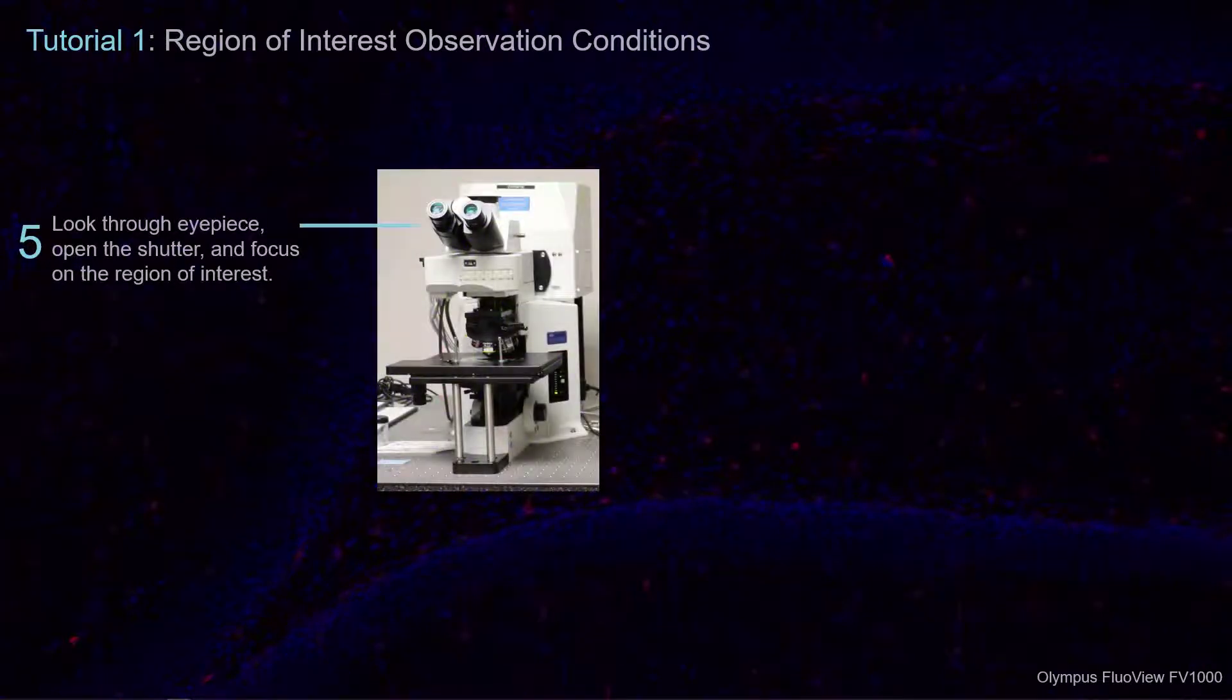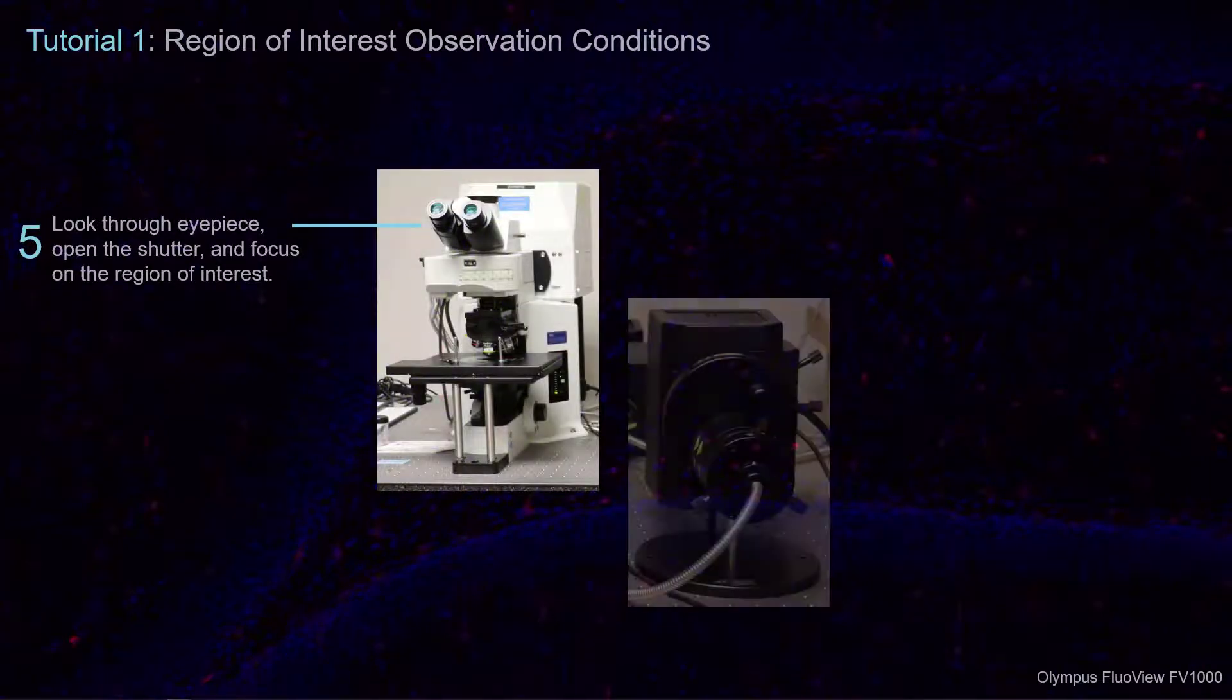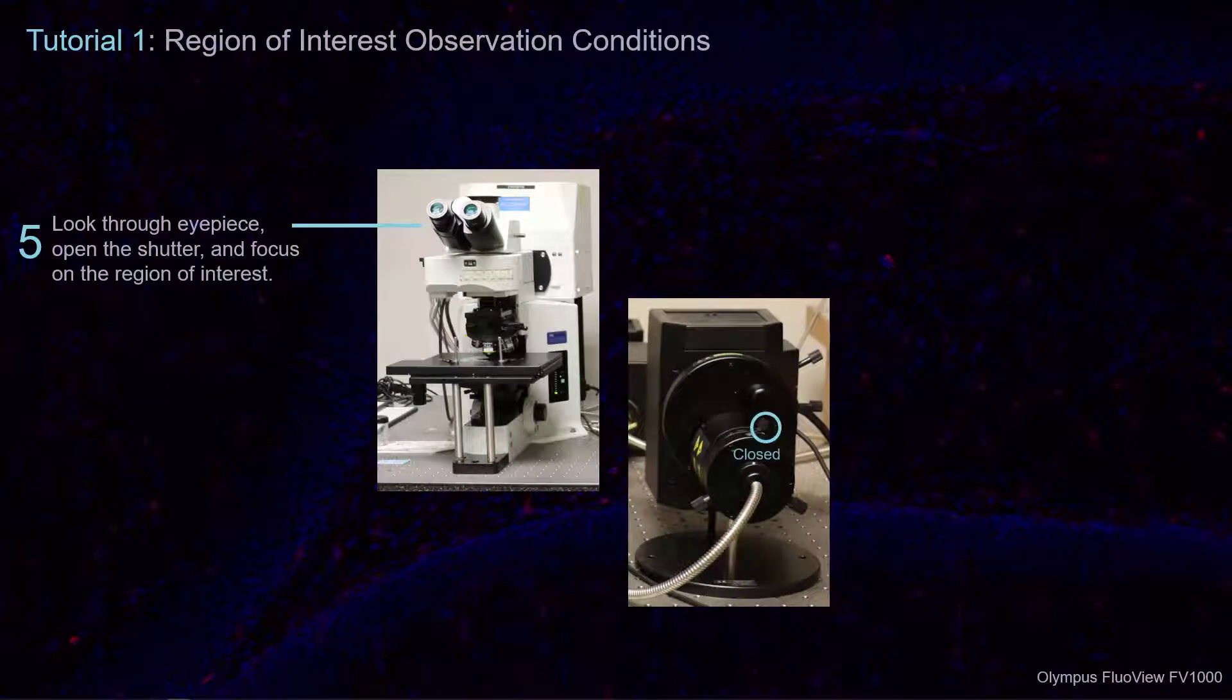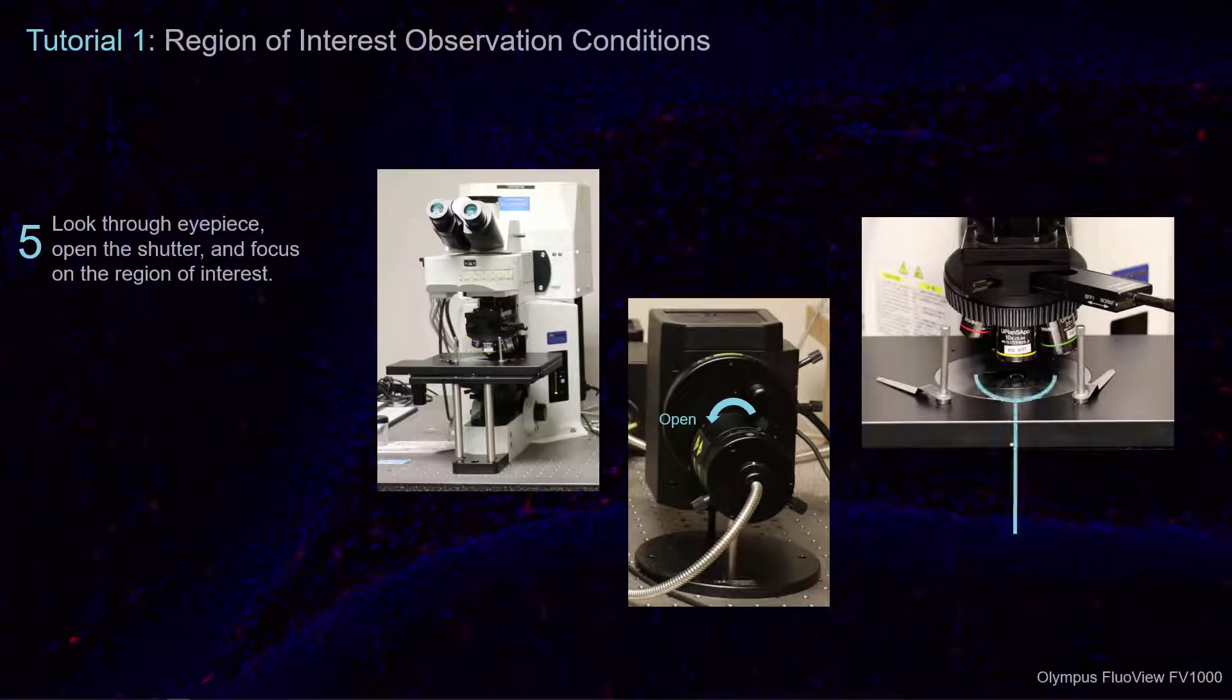While looking through the microscope eyepiece, gradually open the epifluorescent shutter until you can see the counterstain comfortably. Position the region of interest below the objective lens, then focus on the slide with the microscope focus handle.